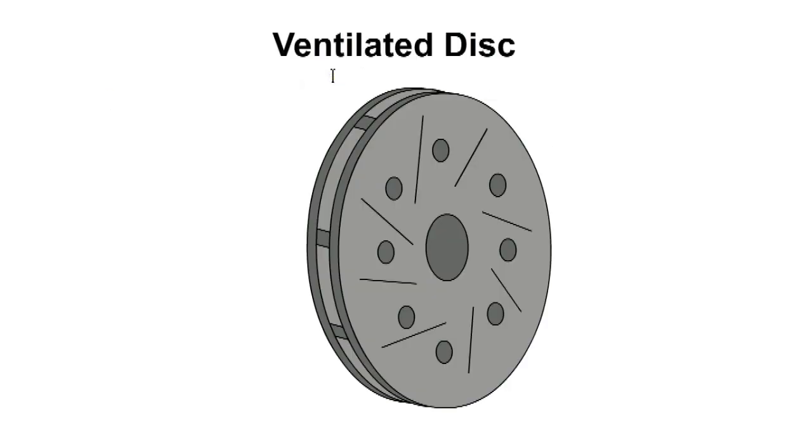To improve braking performance and avoid brake fade, ventilated brake discs are used. They consist of two discs separated by vanes or fins which allow air to circulate for cooling. Slots and holes also help to improve air circulation.